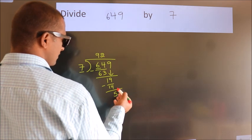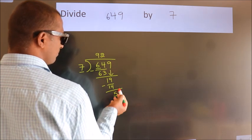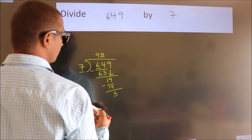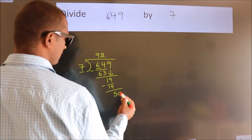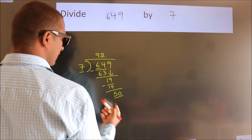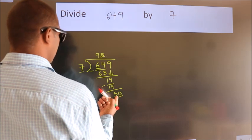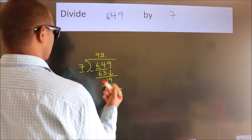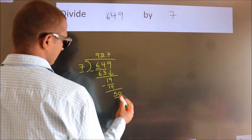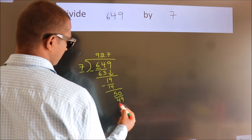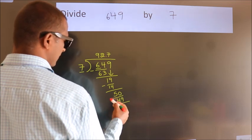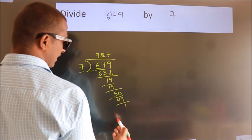After this, no more numbers to bring it down. So what we do is we put dot, take 0. So 50. A number close to 50 in 7 table is 7 sevens, 49. Now we subtract. We get 1.